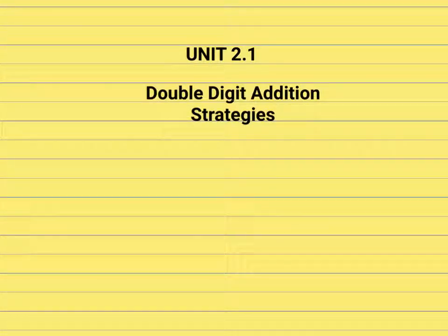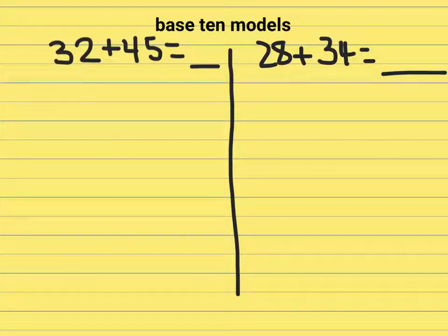Okay, we're going to look at unit 2.1 double digit addition strategies. First we're going to take a look at 32 plus 45. What we're going to be doing is drawing this out using the base ten models.